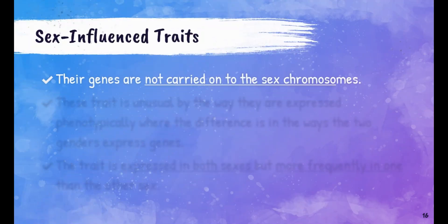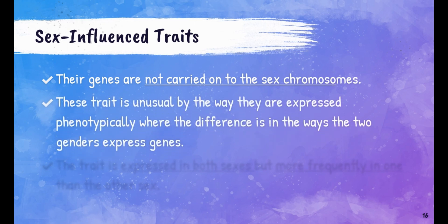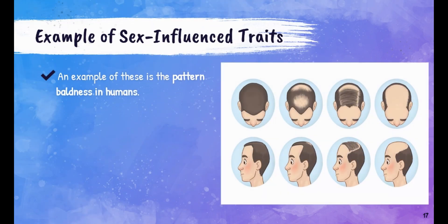Sex-influenced traits are genes that are not carried on the sex chromosomes. These traits are unusual in the way they are expressed phenotypically — the difference lies in how the two genders express the genes. This means both men and women have the traits, but it's expressed more in one gender than the other. An example is pattern baldness in humans. Even though the trait is not restricted only to males, it's more prominent in males because of the testosterone they have. Both males and females have testosterone, but males have much higher levels, so baldness in males behaves like a dominant allele, while in females it behaves like a recessive allele. That's why you usually see more male bald persons than female bald persons.